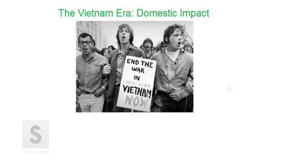In our previous lecture, we talked about the international impact of the war and how the U.S. became involved in Vietnam in the first place, the reasons for it, how the war progressed, and ultimately the outcome of the conflict. In this lecture, we're going to focus more on the social and cultural trends that the war era brought about in American society and examine why we see the emergence during this period of a protest movement — one that was really unprecedented in American history of people in opposition to the war.